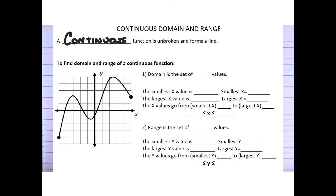Domain is the set of all x values. When looking at my graph, I need to focus on the x-axis and find my smallest x value and my largest x value. The smallest x value is always to the left — following my line, the furthest left it goes is negative 5, so my smallest x value is negative 5.